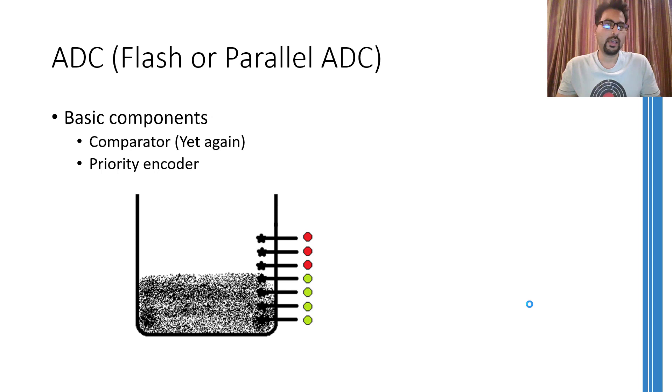I'll try to explain the working of a flash ADC using an example of a 3-bit flash ADC. This 3-bit flash ADC is going to use seven comparators to perform the conversion.